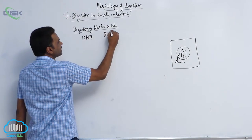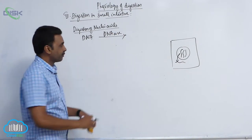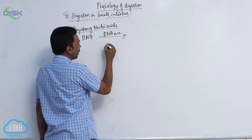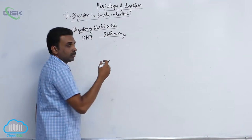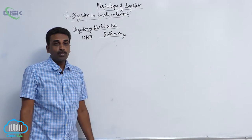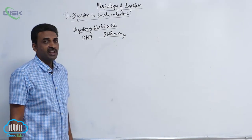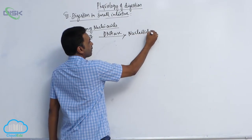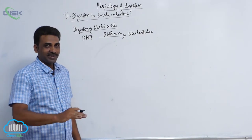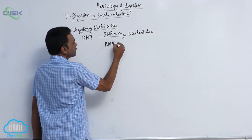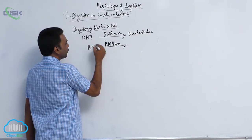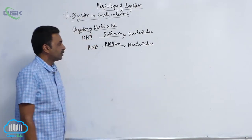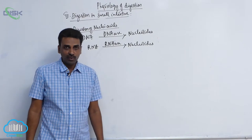There is an enzyme called DNase, which acts on DNA — a double chain of polynucleotides — and breaks it down, separating individual nucleotides. Similarly, RNase acts on RNA and produces nucleotides. These two enzymes, DNase and RNase, are together called nucleases because they act on nucleic acids.